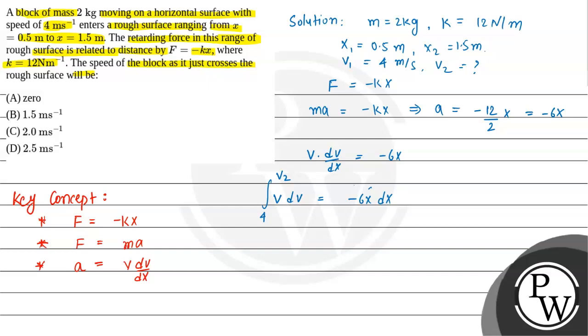And here also we will integrate. So minus 6 is constant, we will take this out. And when we integrate this, the rough surface range is from 0.5 to 1.5. When v is integrated with respect to dv, it becomes v square divided by 2.